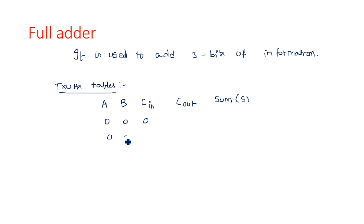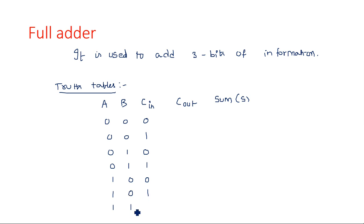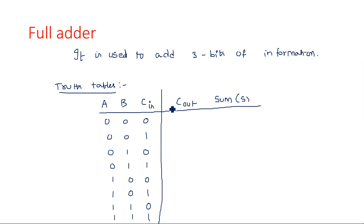Since there are three inputs, the truth table has eight rows, going from 000 through 111. The input combinations are: 000, 001, 010, 011, 100, 101, 110, 111. These are all the inputs; the outputs will be filled in accordingly.